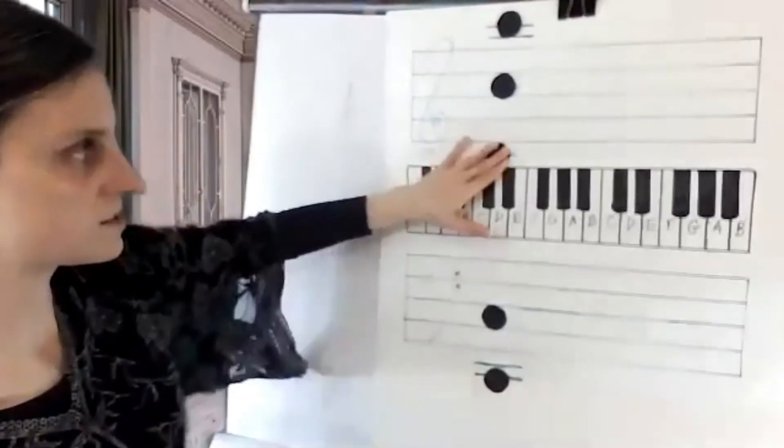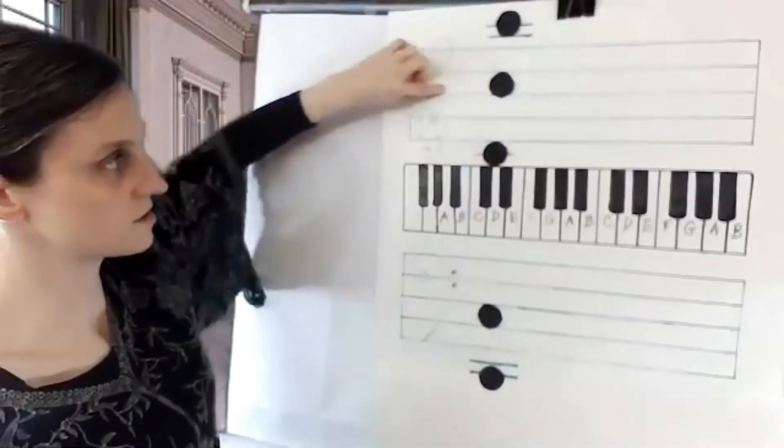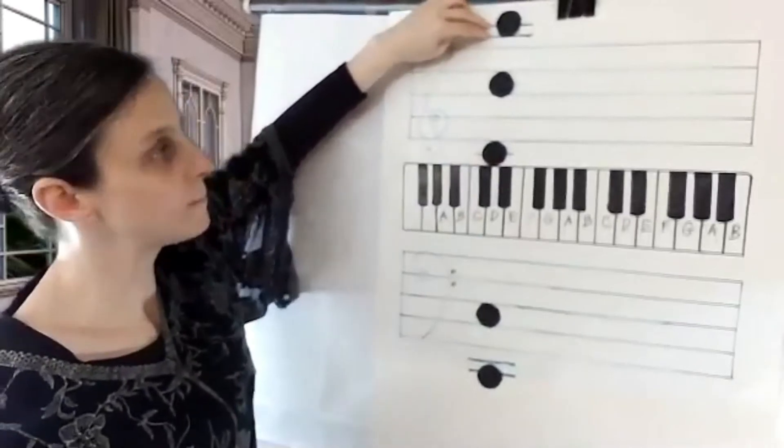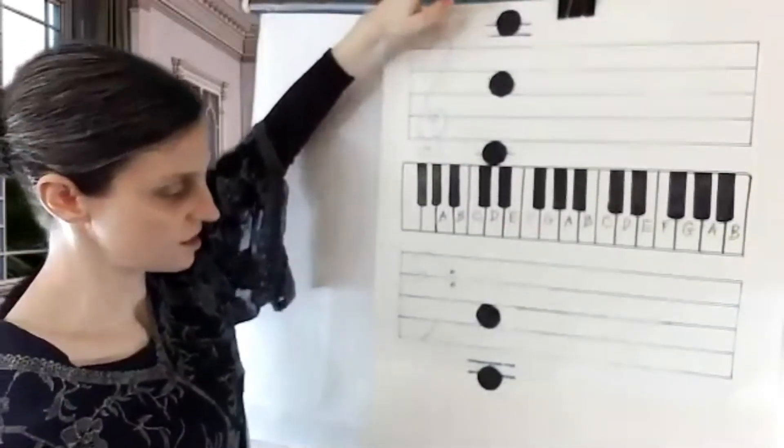So you've got C, the second space to the top, C. Two ledger lines above the treble staff, C.